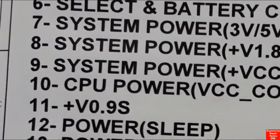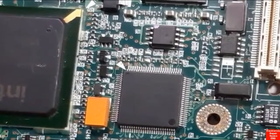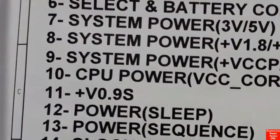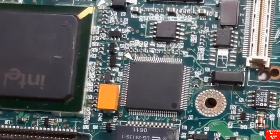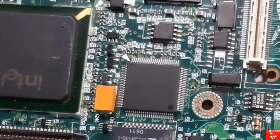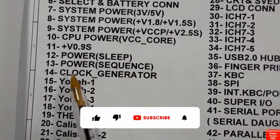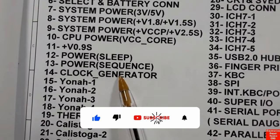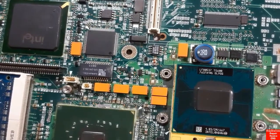In page twelve we have the power slip — basically here you'll find the circuit for the power slip. Page thirteen has the power sequence. In page fourteen we have the clock generator, the IC that is charged to generate the clock or the timing for the whole circuit in the motherboard. Without this clock, the components in the motherboard cannot work properly.